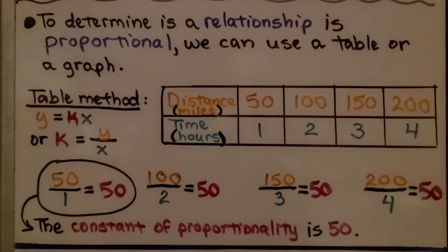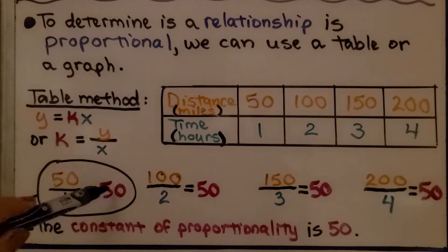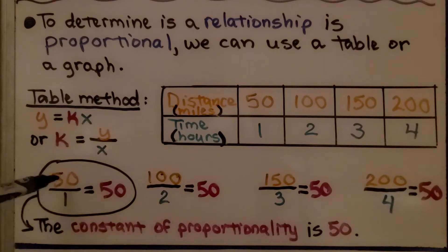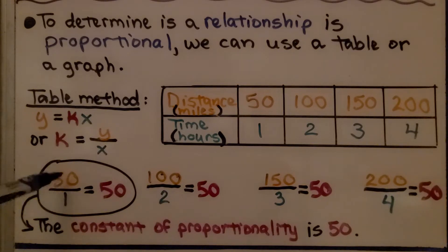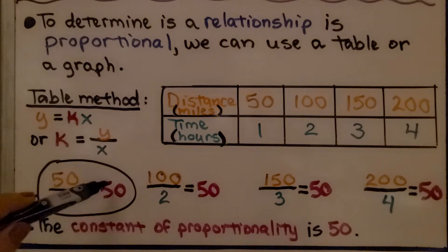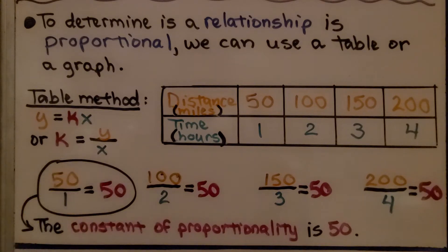The constant of proportionality is 50. We see 50 over 1 — this is our unit rate. The constant of proportionality is 50.